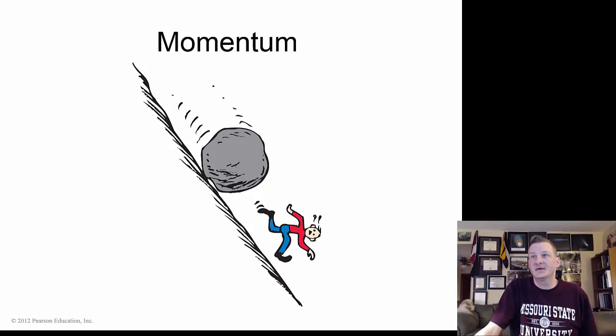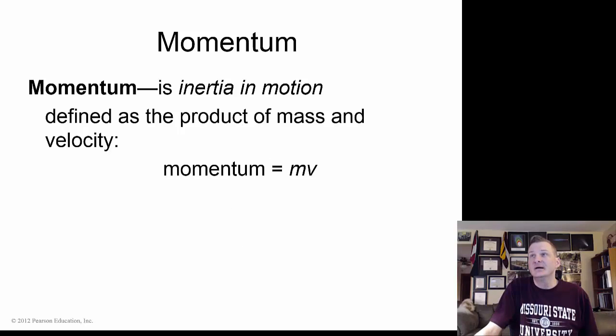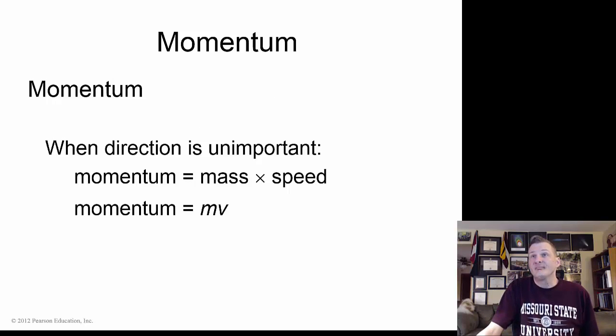What is momentum exactly? We can define momentum as inertia in motion. This is defined as the product of the mass and velocity, so momentum equals mass times velocity. Now when direction is not important, we can substitute velocity for speed because speed does not have a direction to it.